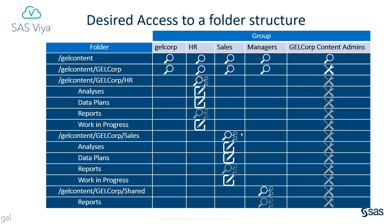The sales folder is secured in much the same way as the HR folder. The sales group need read access to the sales folder and all of its contents, so we apply the sales read convey pattern to the sales folder. Members of sales should be able to modify the contents of the analyses, data plans, and work in progress folders, so we implement the group edit content pattern as a sales edit content pattern and apply that to those three folders. The read convey pattern is shown grayed out to remind us that sales have inherited read access to the reports folder and we don't need to grant sales any additional permissions on it.